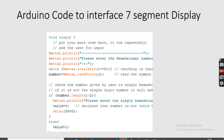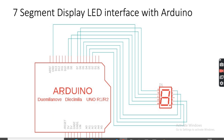On the Arduino side, you need to download and upload the provided Arduino code. This code interfaces a 7-segment display to the Arduino: whatever number is sent to the serial port, it will display that number on the 7-segment display. A circuit/mapping diagram is also provided showing how to connect the Arduino with the 7-segment display.